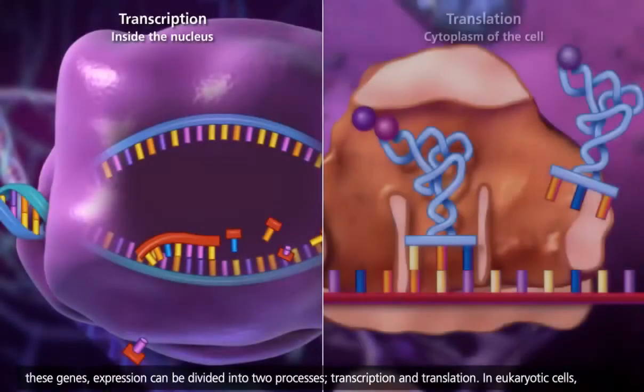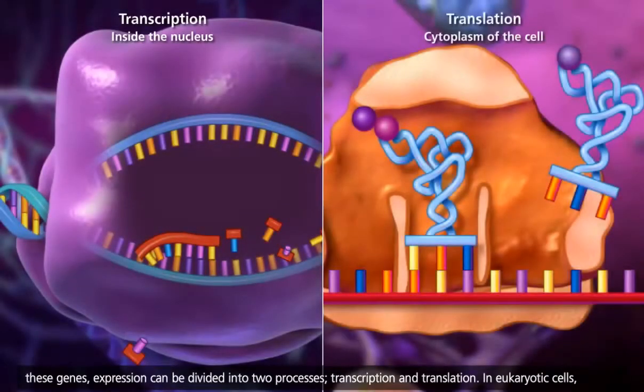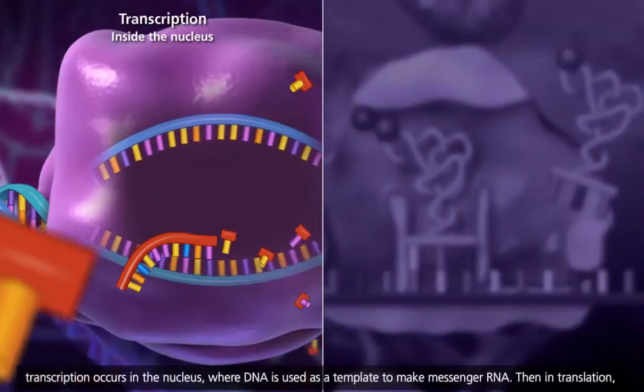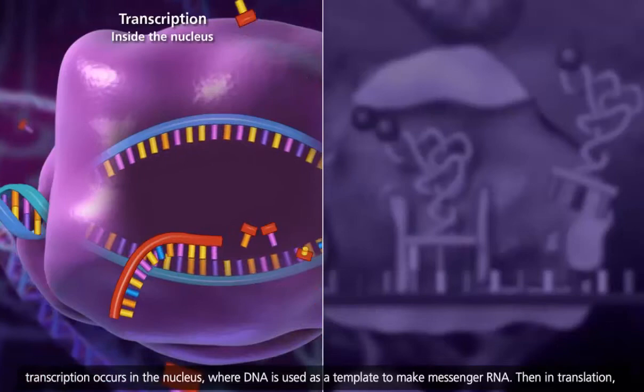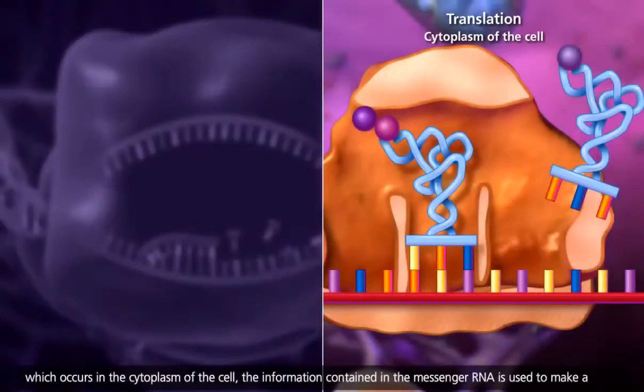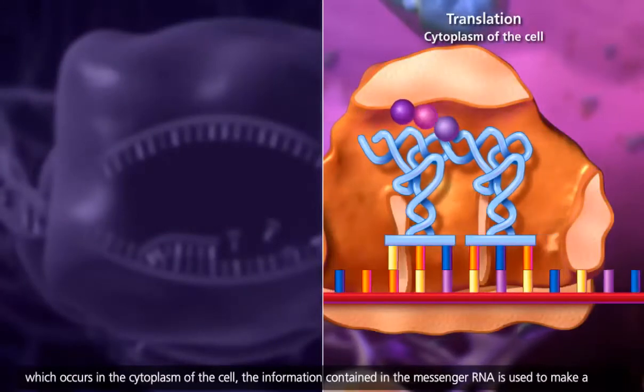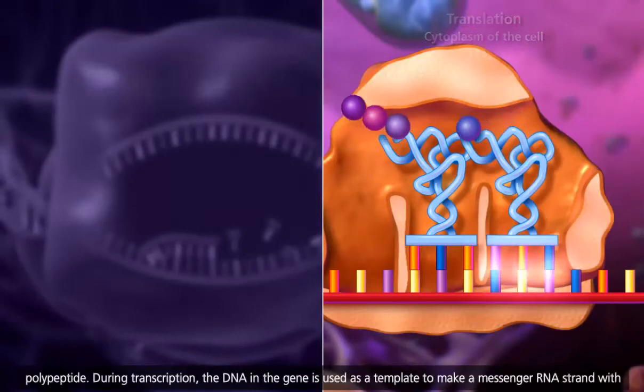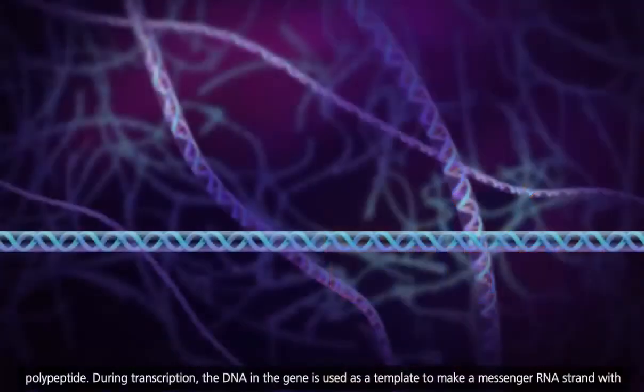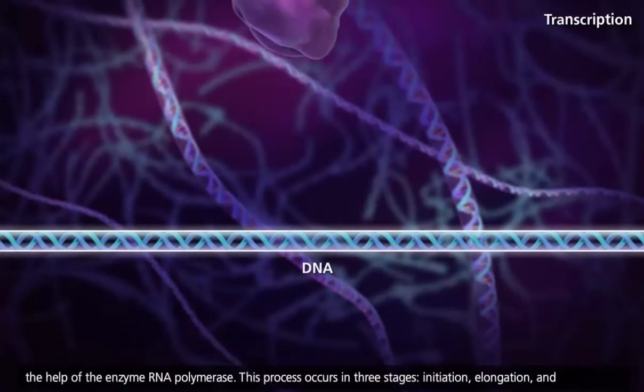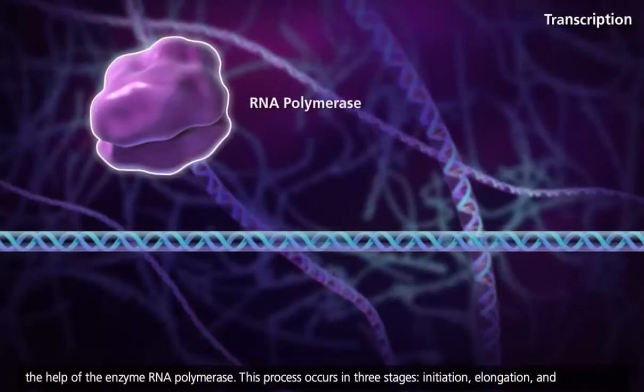Transcription and translation. In eukaryotic cells, transcription occurs in the nucleus, where DNA is used as a template to make messenger RNA. Then in translation, which occurs in the cytoplasm of the cell, the information contained in the messenger RNA is used to make a polypeptide. During transcription, the DNA in the gene is used as a template to make a messenger RNA strand with the help of the enzyme RNA polymerase.